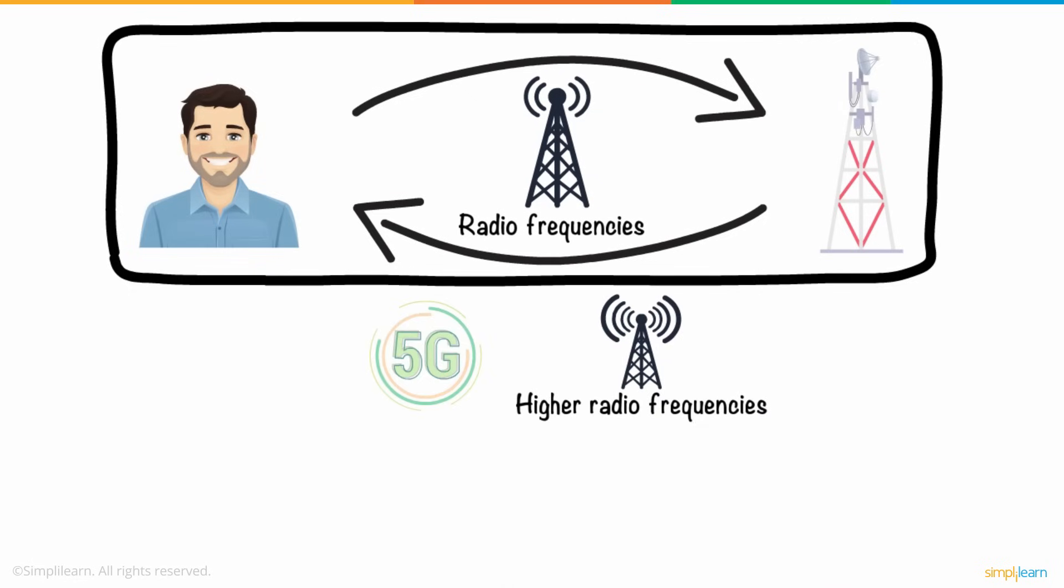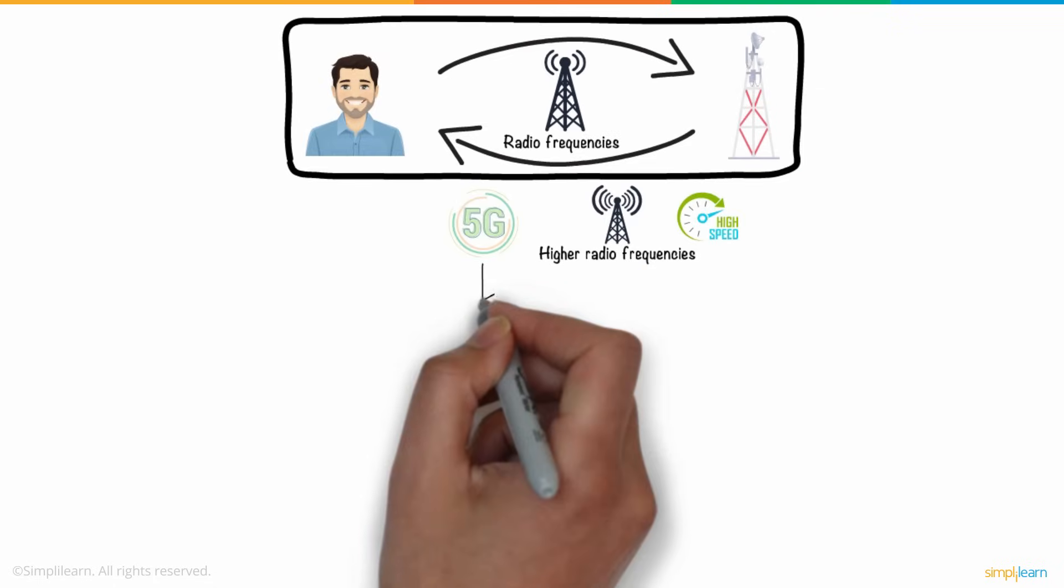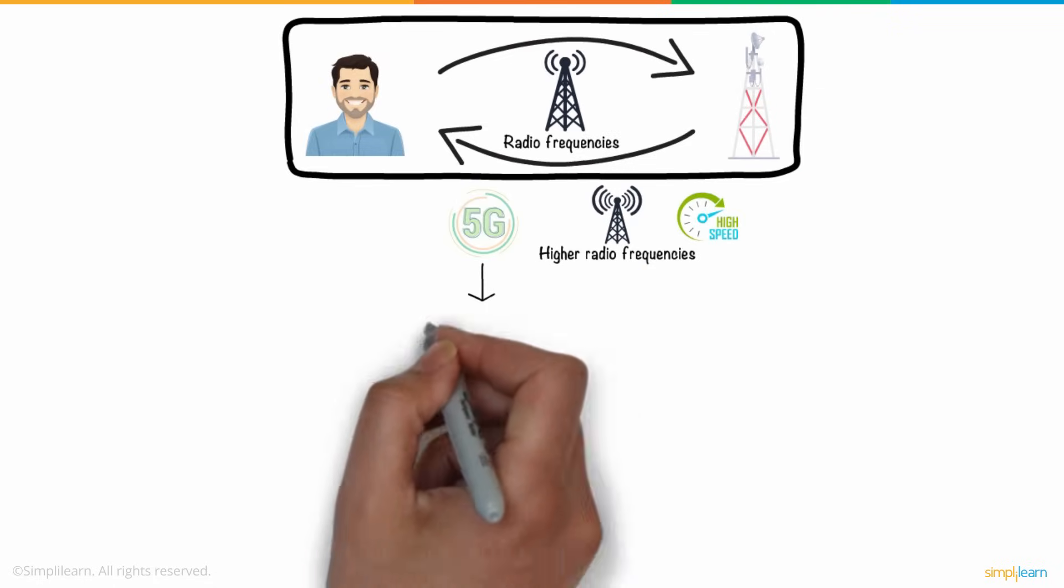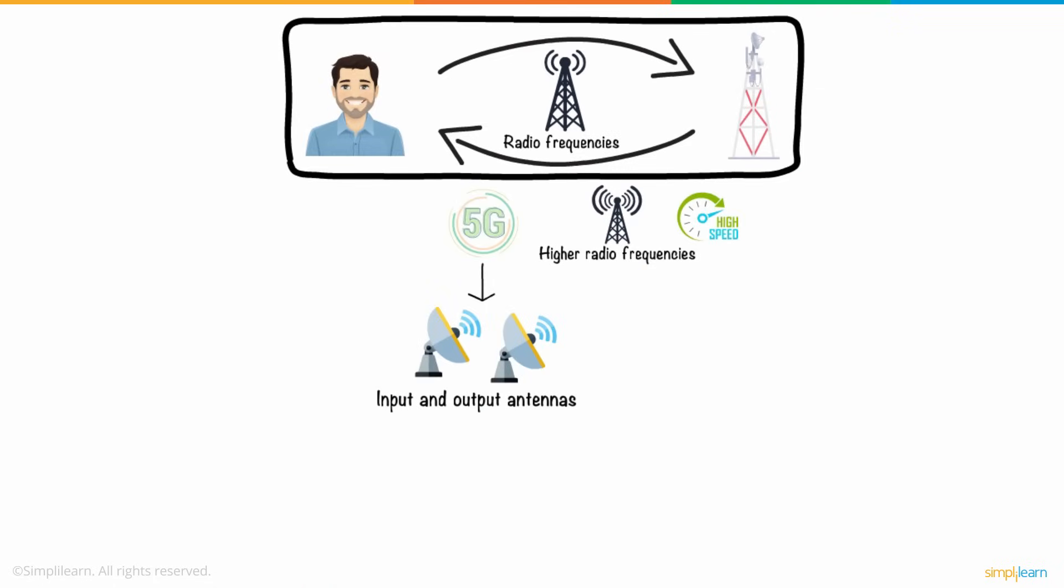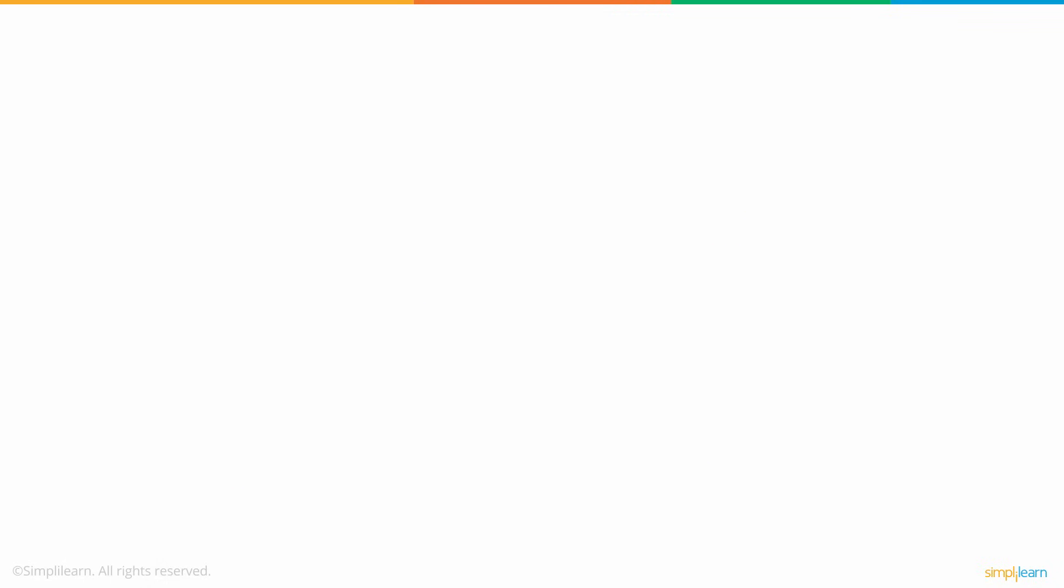5G operates similarly. However, it uses higher radio frequencies to carry more information faster. The beauty of 5G that he discovered was that 5G utilizes multiple input and output antennas to avoid physical objects like buildings and trees coming in the way of communication. Further,